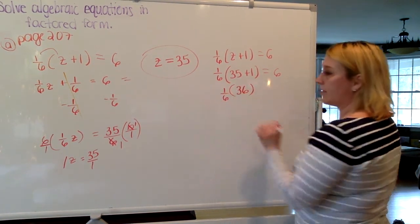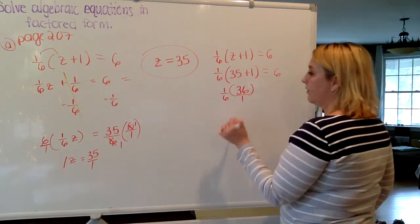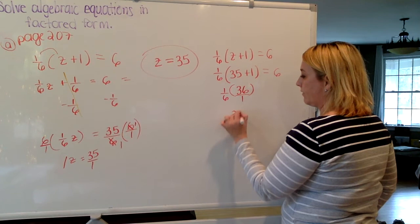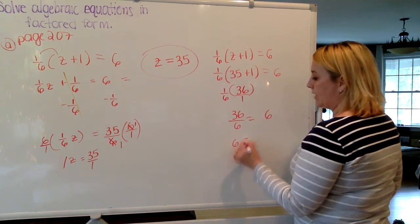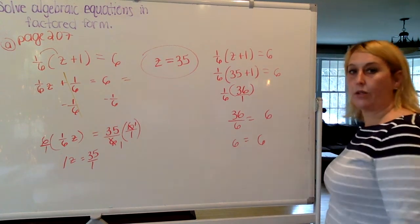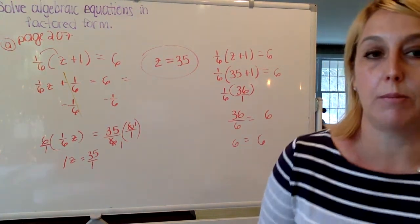1/6 times 36, or 1/6 of 36, is 36 over 6, which is the same as saying 6 is equal to 6. So I know that I did my problem correctly.